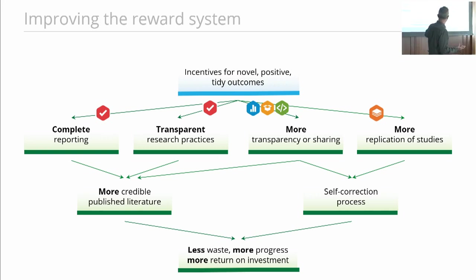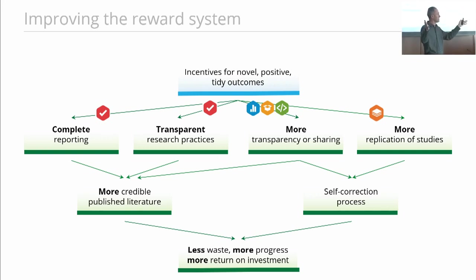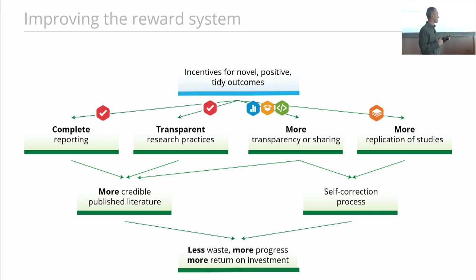Pre-registration can address questionable research practices — maybe not stop them, but at least expose them. And by registering studies, we know that they exist. Even if I did 100 studies and only wrote up 20 of them for publication, you can still find the other 80 to be able to assess the credibility of the literature as a whole.